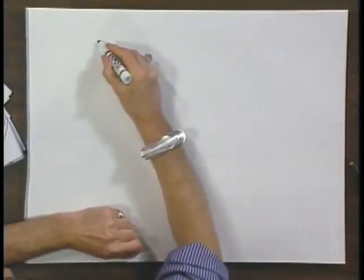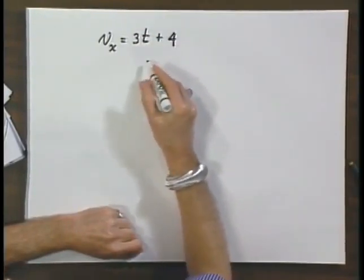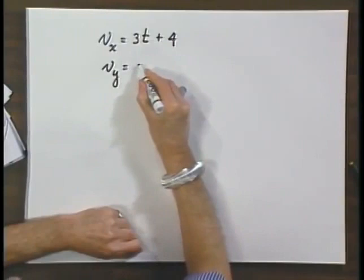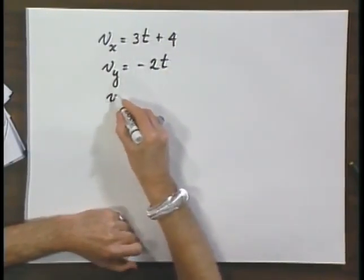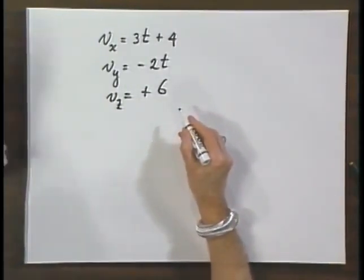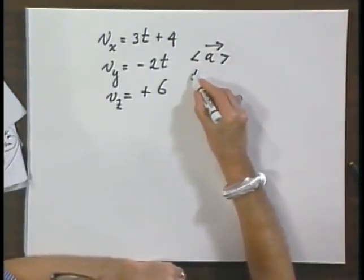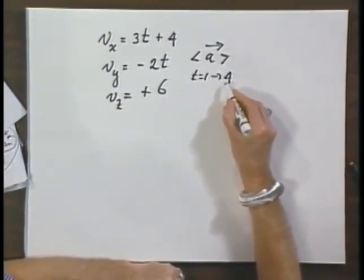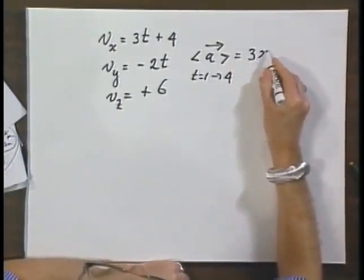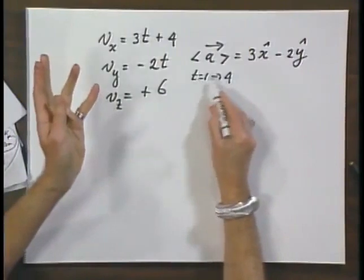And I would like to revisit something that I did earlier whereby we had v of x, 3t plus 4, v of y equals minus 2t, and v of z was plus 6. We calculated the average acceleration between time t equals 1 and time t equals 4. And what did we find? We found 3 x hat minus 2 y hat. And we picked these two times randomly.